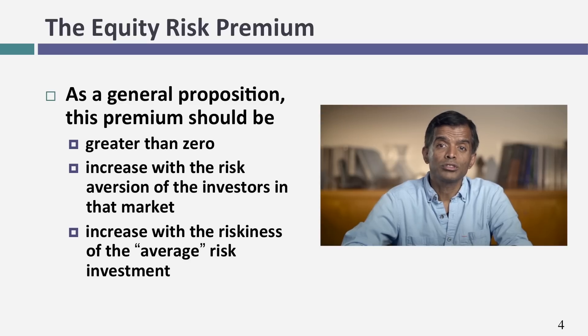The risk premium will depend on how risk-averse you are as an individual. The more risk-averse you are, the higher the risk premium should be. Part of what drives risk aversion is your age — younger people are less risk-averse than older people. Men are a little less risk-averse than women. Over time your risk aversion might change, but you're born with some risk aversion and you're never going to change it completely. Risk aversion varies across individuals and determines your equity risk premium.